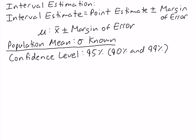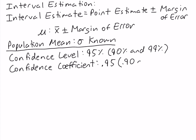In our calculation of the interval estimate, we use the decimal form of the confidence level, which is called the confidence coefficient. So if our confidence level is 95%, our confidence coefficient is 0.95. If the confidence level is 90%, the confidence coefficient is 0.90, and if it's 99%, the confidence coefficient is 0.99.